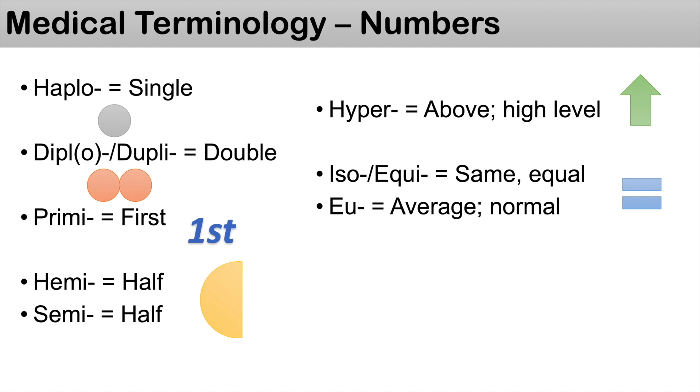Another one that's similar, but not quite the same, is the prefix u, which means something that's average, something that's normal. You can think of uvolemia, a normal amount of volume.